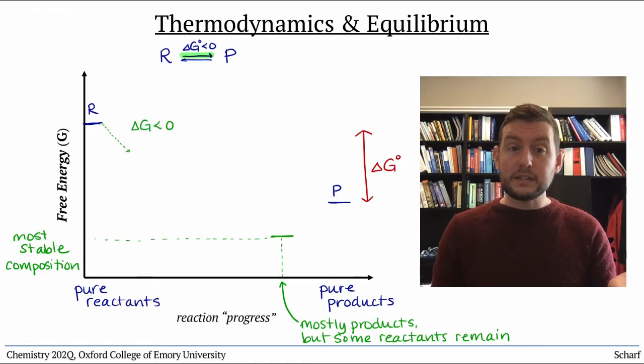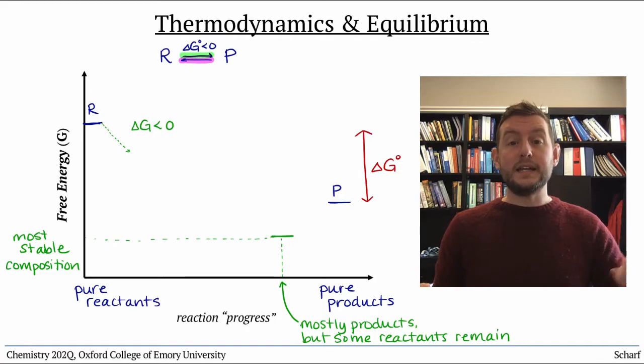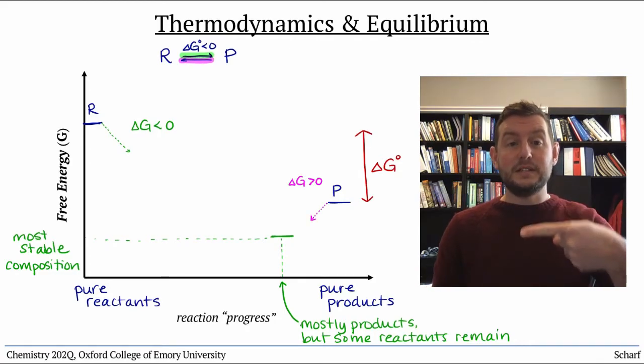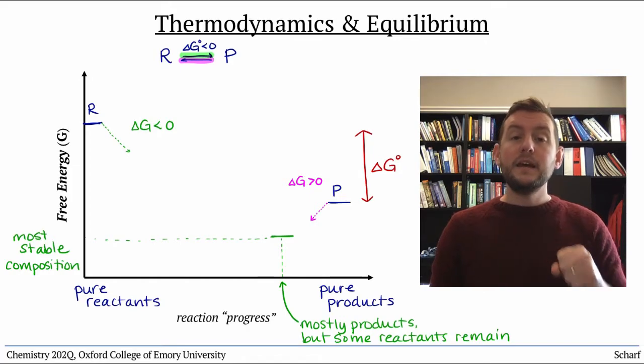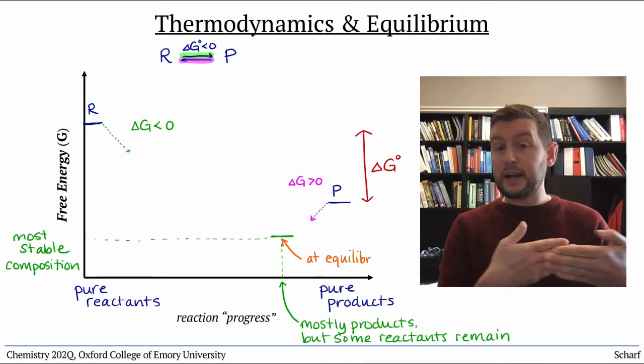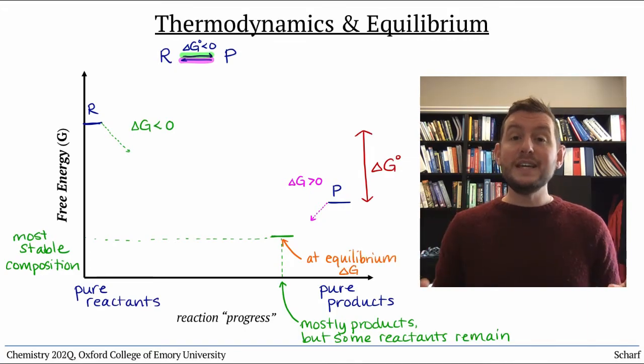If you start with pure product, the reaction will be spontaneous in the reverse direction, and will have a positive delta G. And at equilibrium, no net reaction is happening in either direction, so delta G is zero.